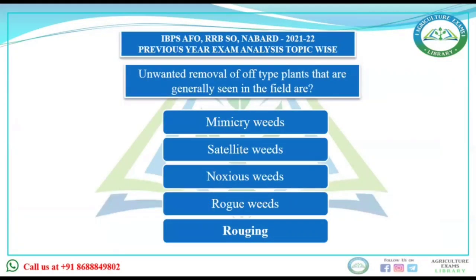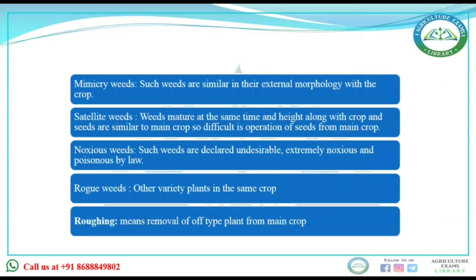The next question is: unwanted removal of off-type plants generally seen in the field are called what? Options: mimicry weeds, satellite weeds, noxious weeds, rogue weeds, and roguing. Mimicry weeds look externally similar to the main crop in morphology. Satellite weeds have the same maturity period and height as the main crop, making them difficult to remove. Noxious weeds are declared undesirable, notorious, and poisonous. Rogue weeds are other-variety plants found in the main crop. Roguing means removal of off-type plants from the main crop — so the answer is roguing.